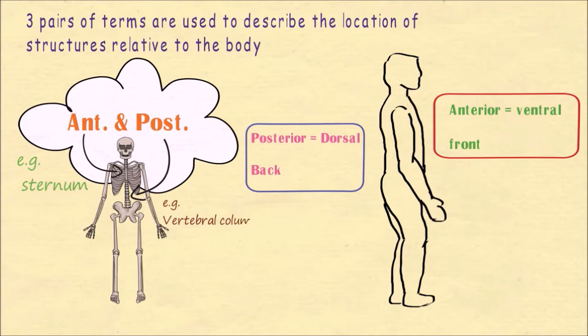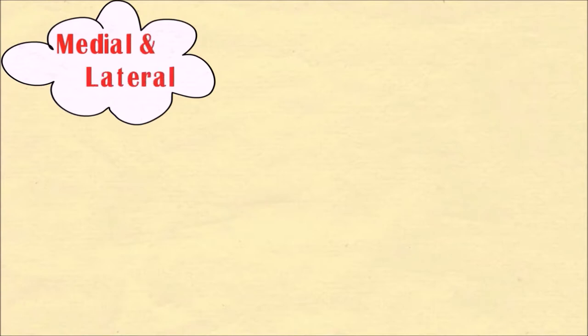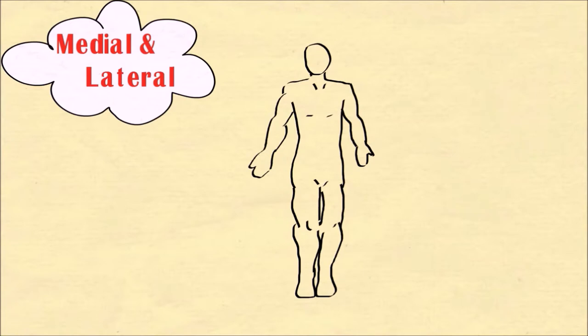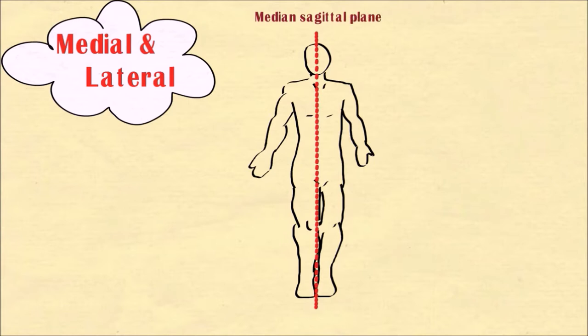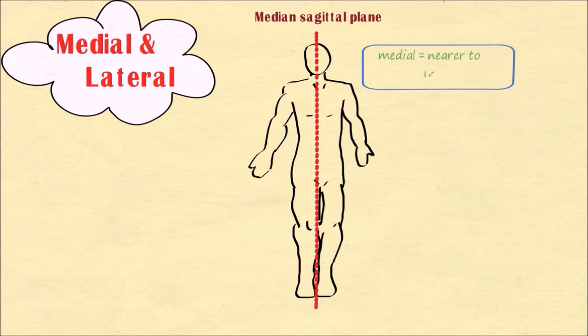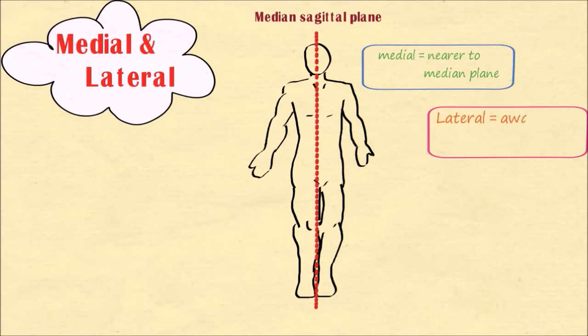The next terms are medial and lateral. These two terms describe the position of structures relative to the median sagittal plane and the sides of the body. Medial means nearer to the median plane, and lateral means away from the median plane.